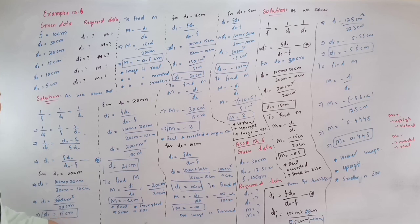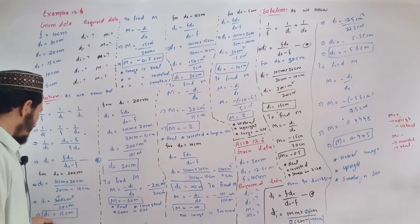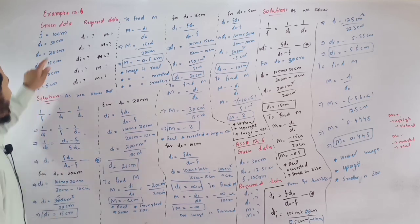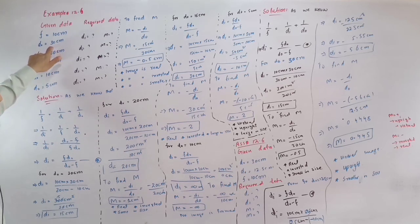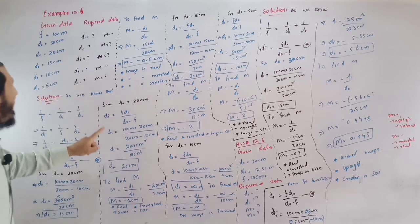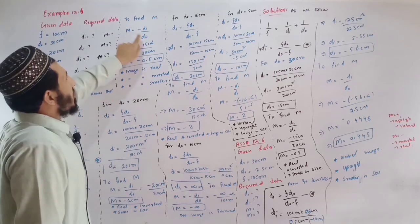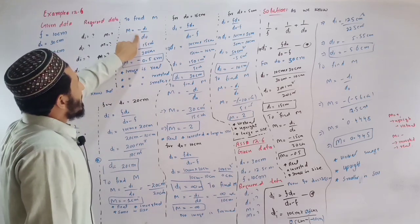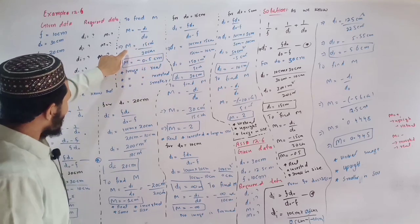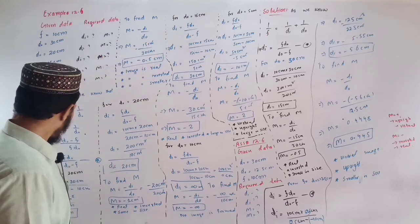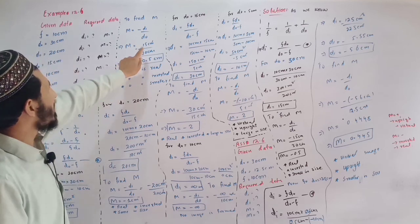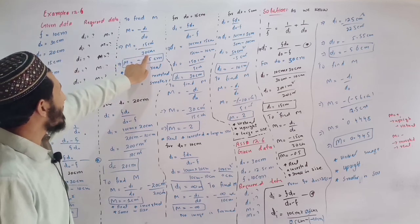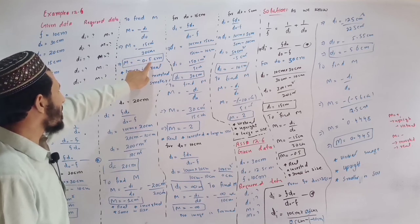d0 minus f. For 10 cm, d0 is 30 cm, so di will be 15 cm. The magnification m is equal to minus di divided by d0. 0.5.